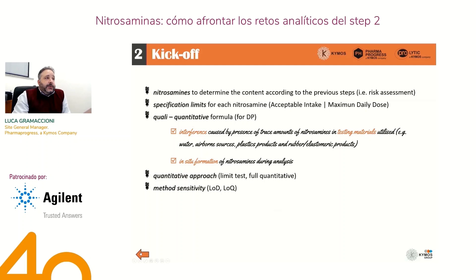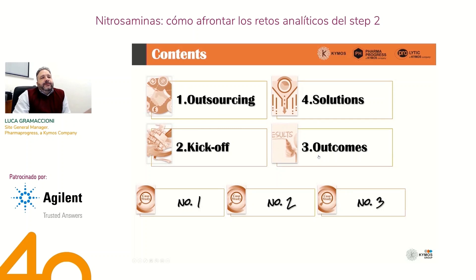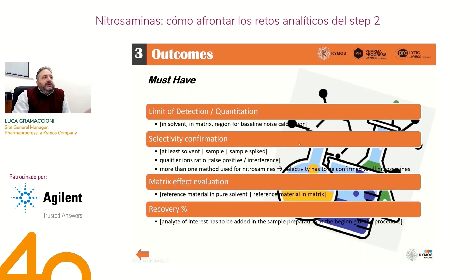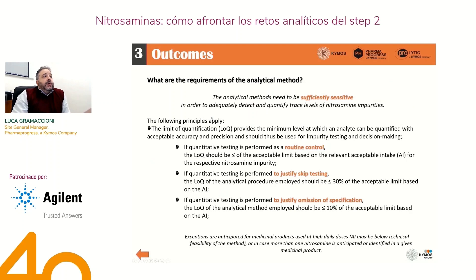On the other hand, what are the information you need to answer to the regulatory authorities, which have to be included in the report delivered by the CRO? One of the most important points is the limit of detection and limit of quantitation of the method: how they have been determined, whether in solvent or in matrix, and the region of the baseline used for baseline noise calculation. With the LOQ parameter, you can justify your strategy — if the method has an LOQ lower than 10% of the specification limit and the sample results are below the LOQ, you can justify omission of the specification.